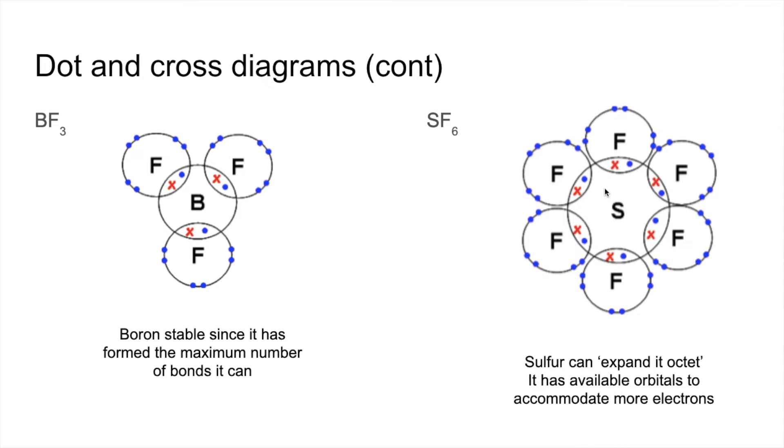Sulfur can expand its octet. So it can go beyond eight, and that's because it has available orbitals to accommodate more electrons.